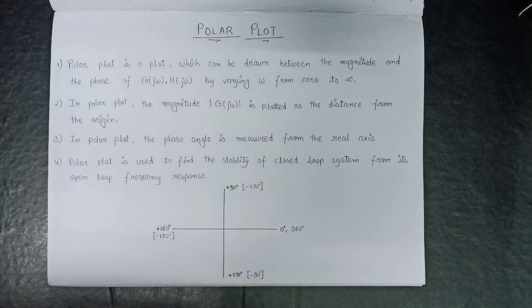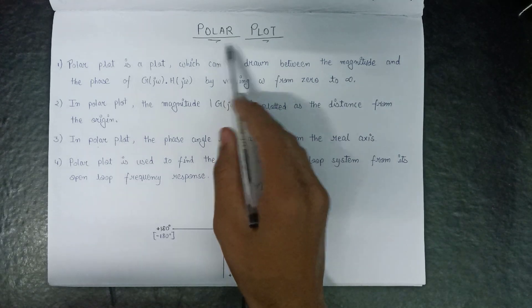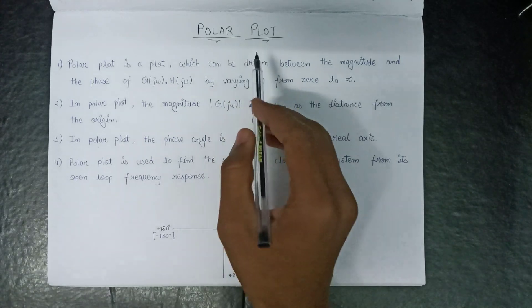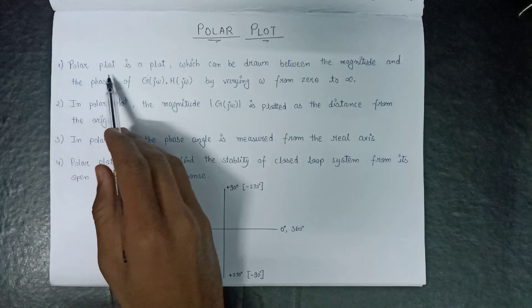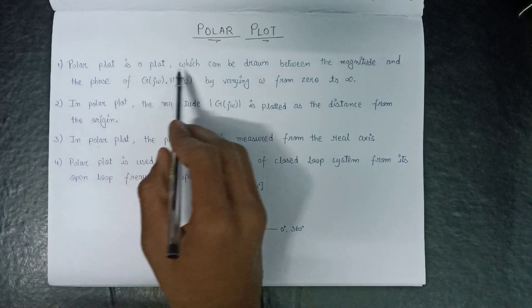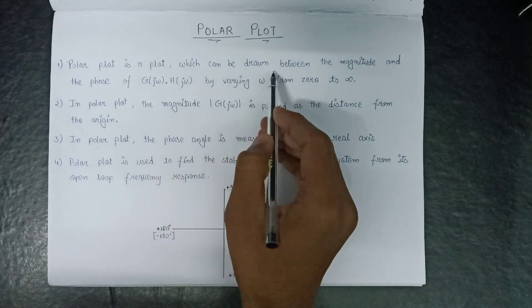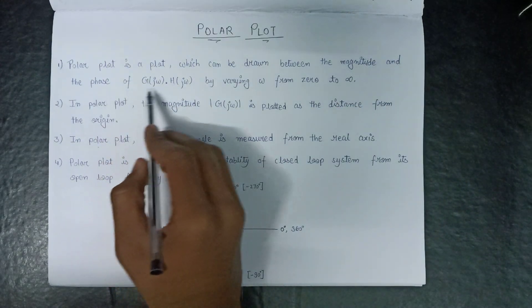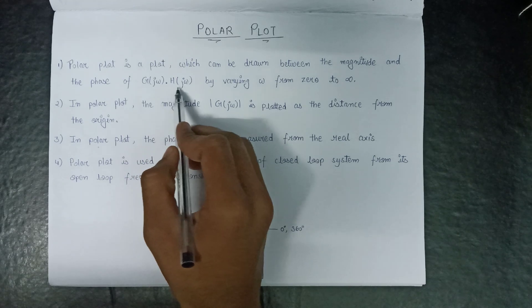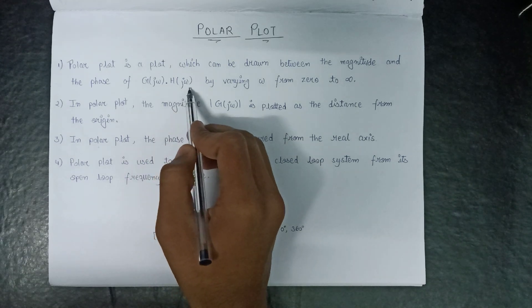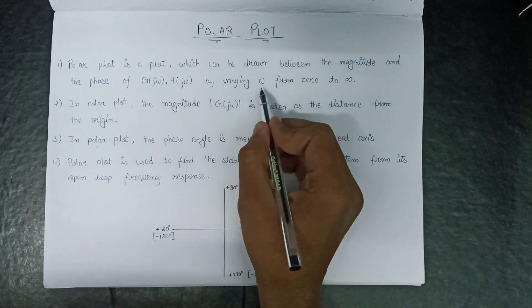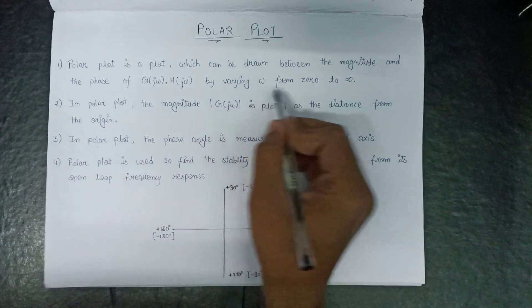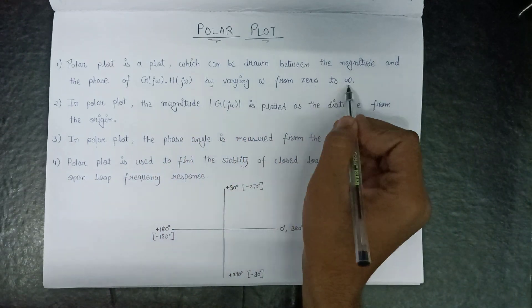Welcome all. In this lecture we are going to start a new topic named as polar plot. A polar plot is a plot which can be drawn between the magnitude and the phase of G(jω) and H(jω) by varying the value of ω from 0 to infinite.